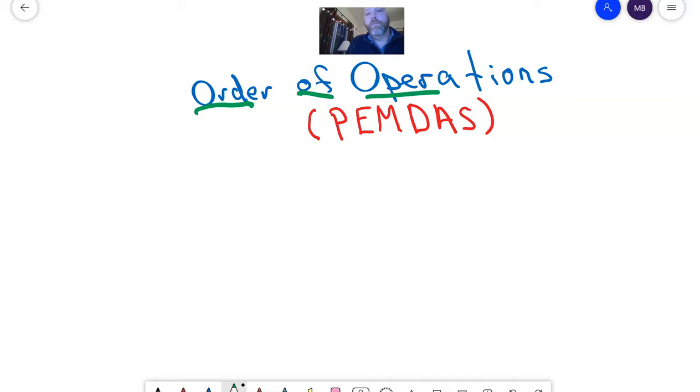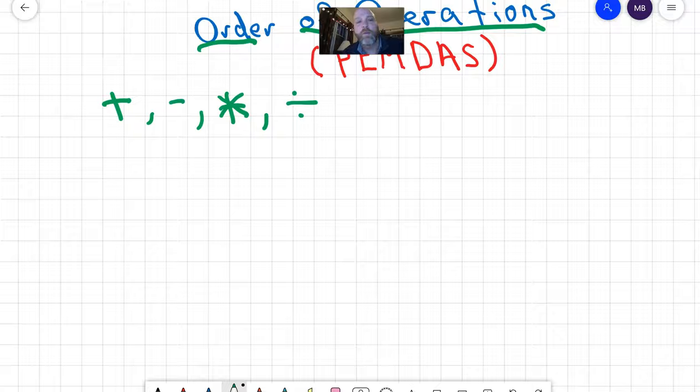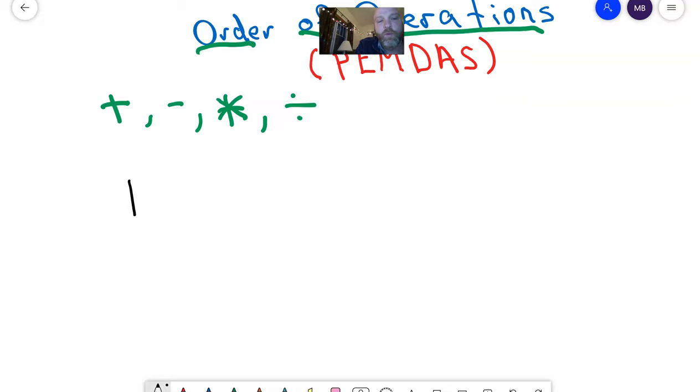Hello Sixth Graders, today we're going to talk about the order of operations. When we talk about operations, we're talking about stuff you've been doing for a long time: adding, subtracting, multiplying, and dividing. There's a specific order that we use when we have a problem. Sometimes we might have an easy problem like one plus two - we've been doing that for a very long time. One plus two equals three.